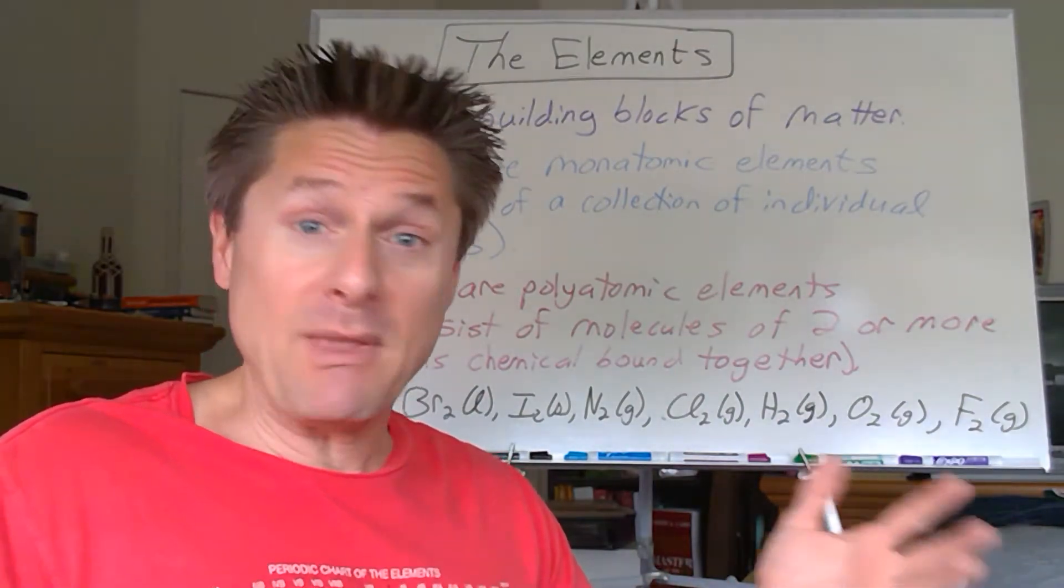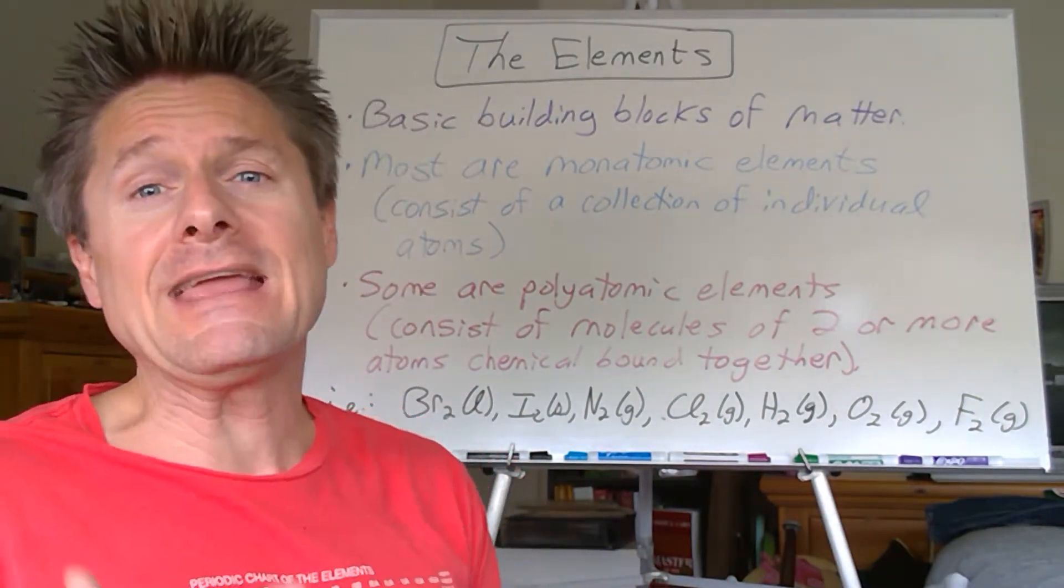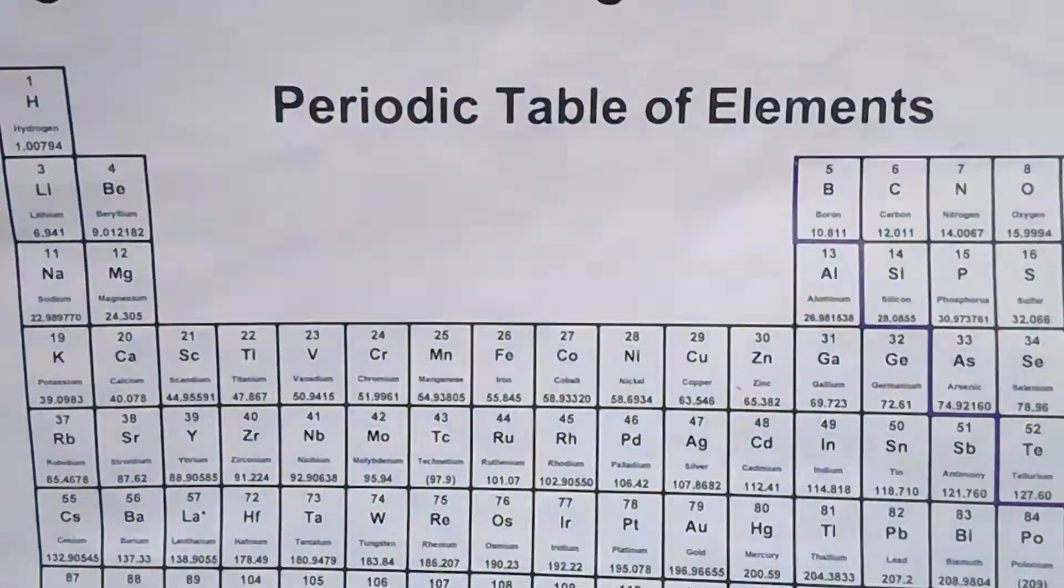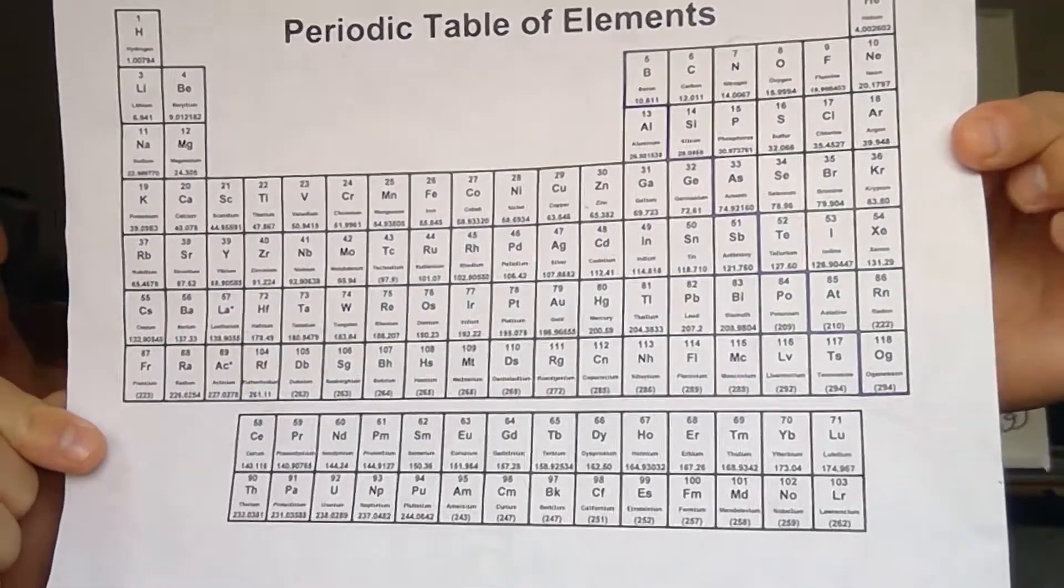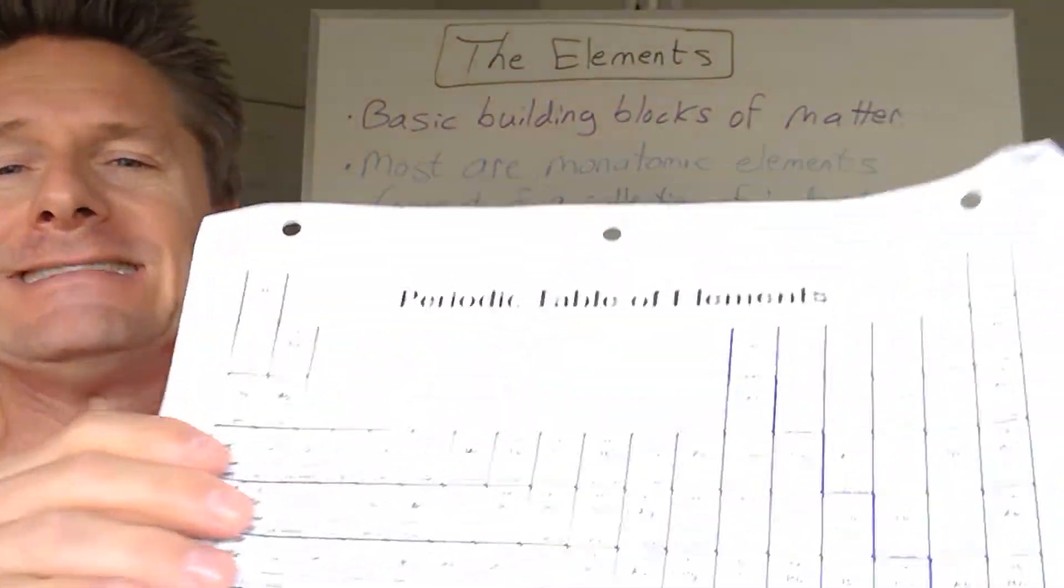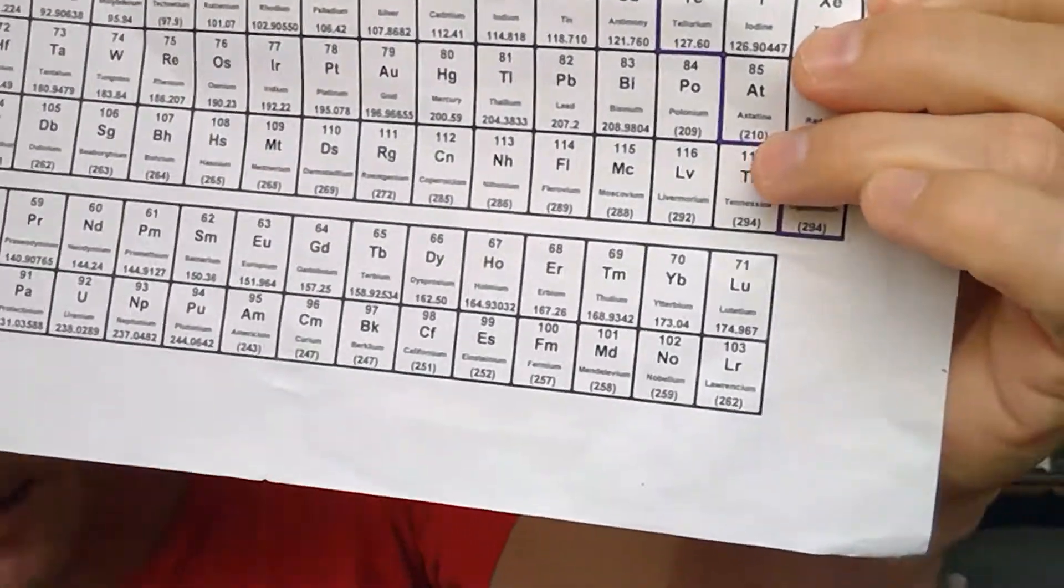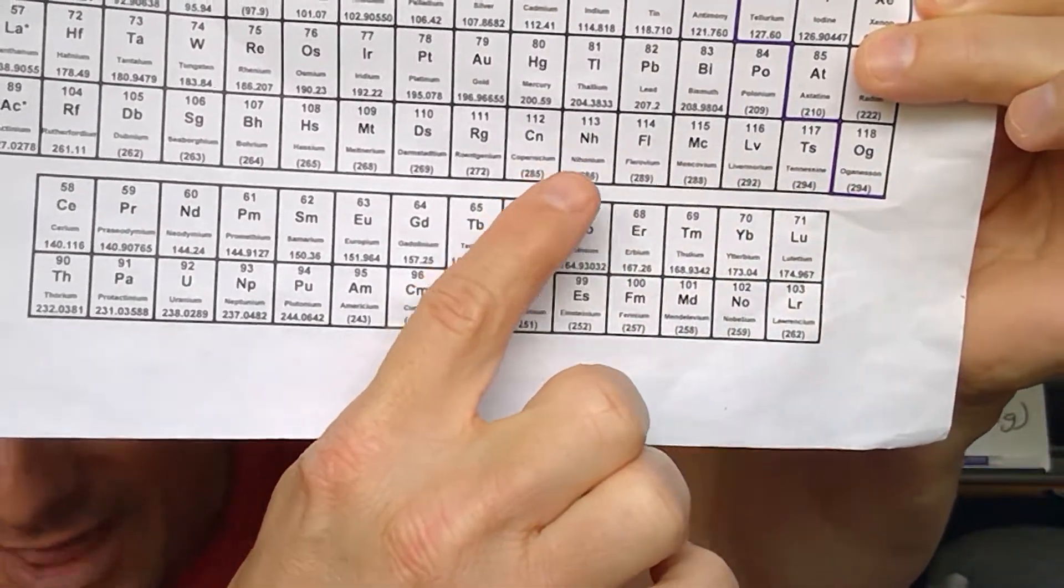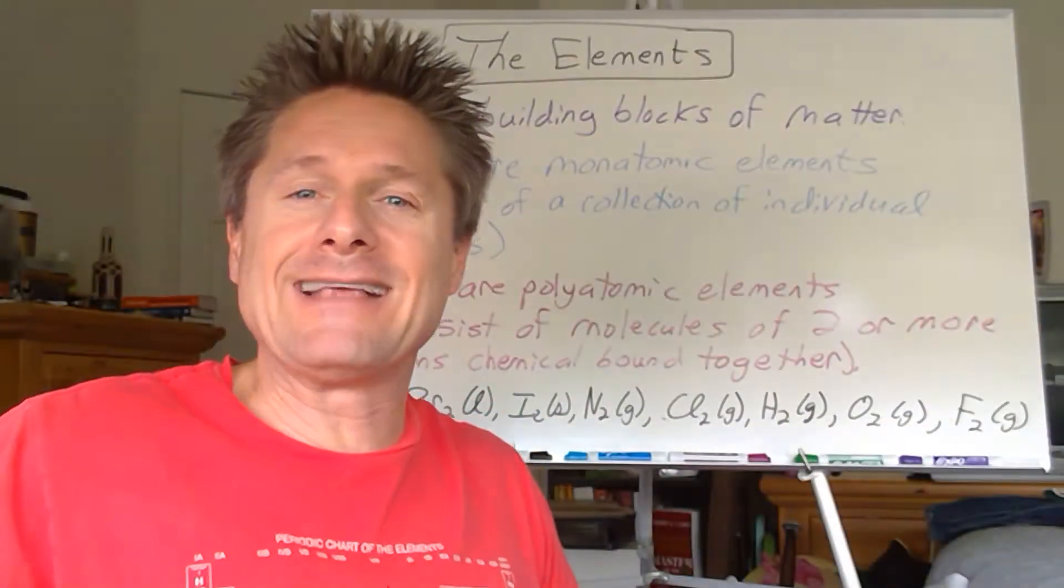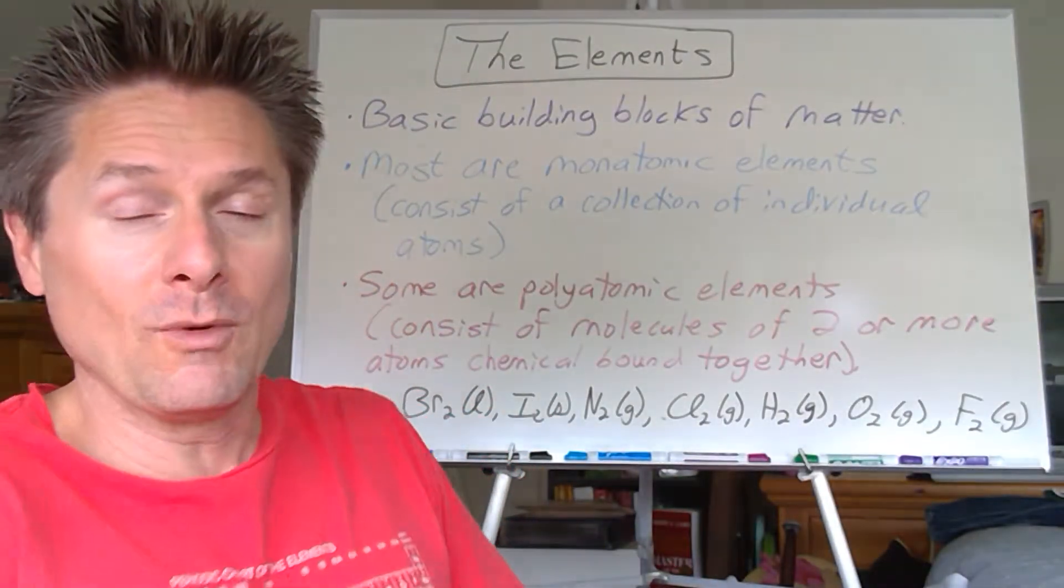unless you know the alphabet. You got to be able to put words together. So think of the elements, right? All these babies on the old periodic table—depending which version you have, I have 118 now with oganesson. A lot of these were just recently formalized in the last couple of years, really cool ones.